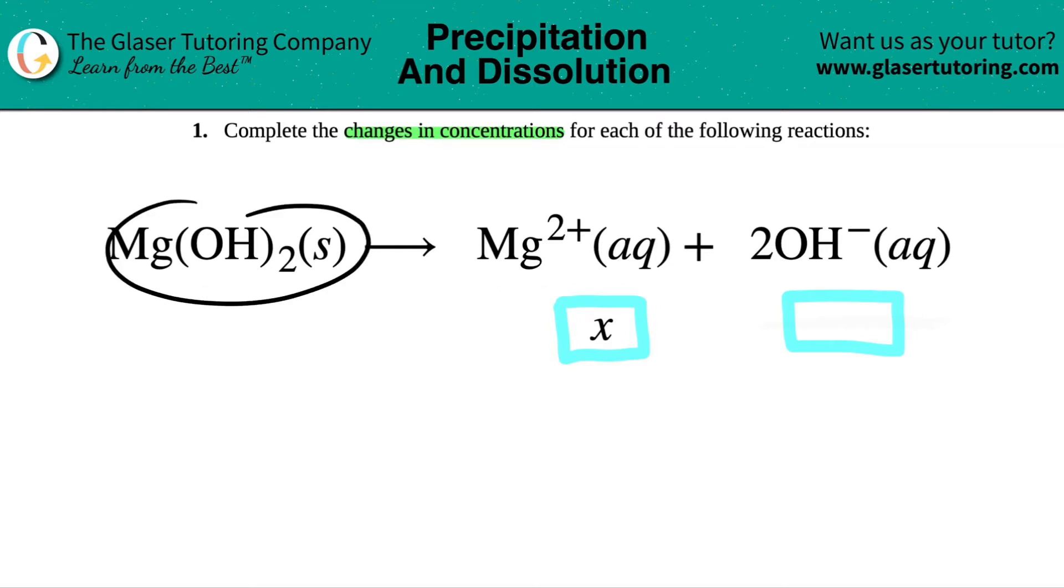We have magnesium hydroxide, Mg(OH)2 solid, which yields two ions: magnesium 2+ aqueous, plus two hydroxides, 2OH-.